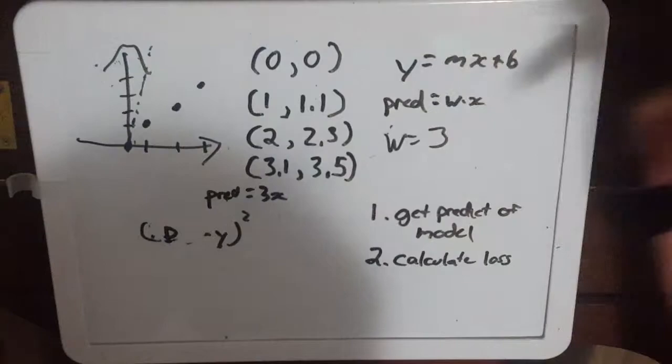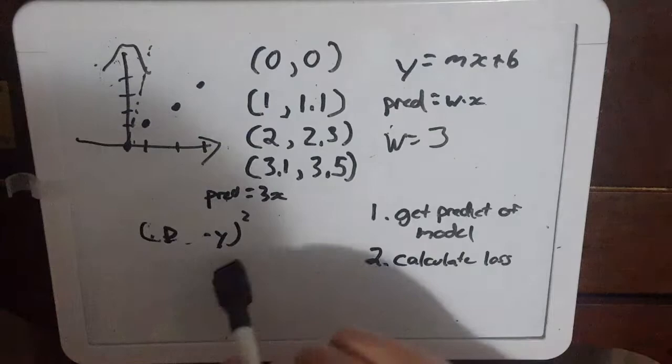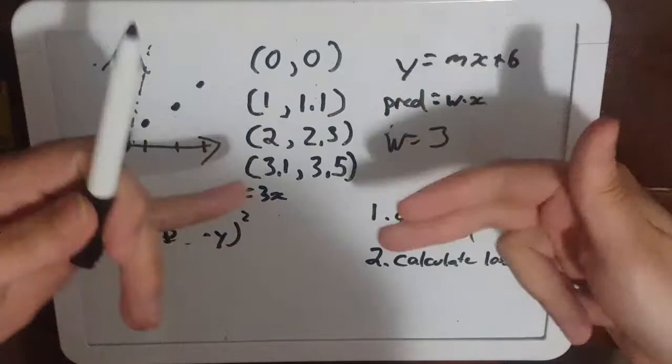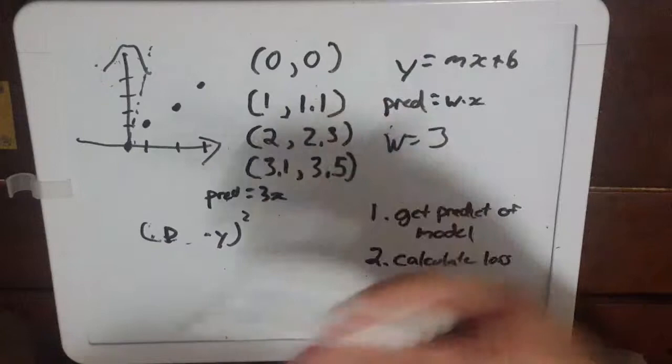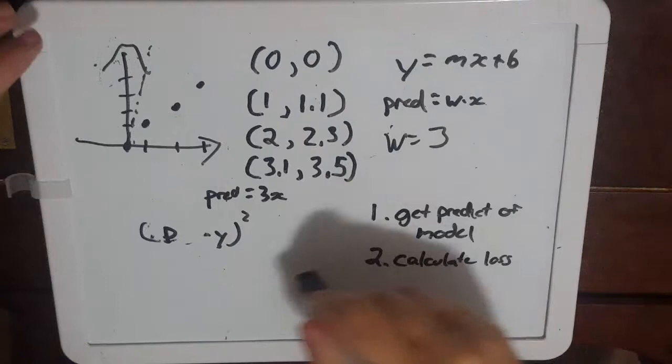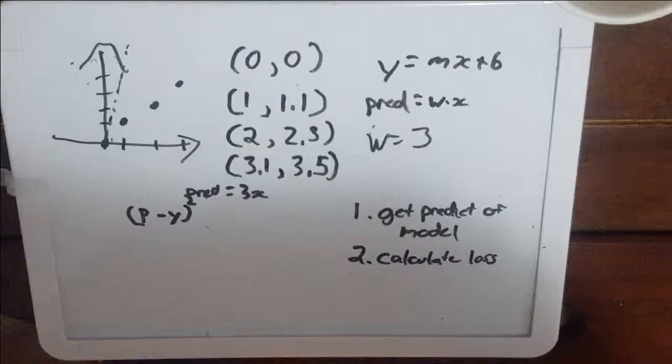We're just squaring it to get rid of negative numbers. We have a prediction, we have our label data and then we square it, we add them all up and then divide them by the number of data we have. So we'll take our errors squared and then divide by four. That's our mean squared error.